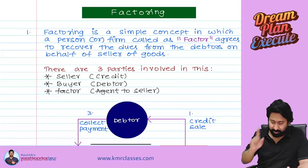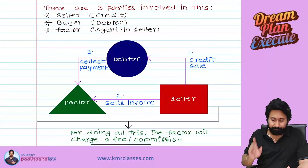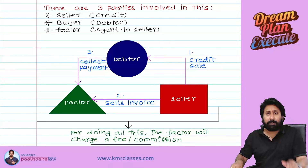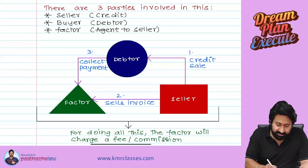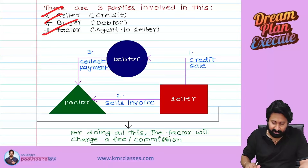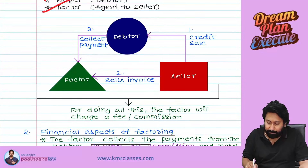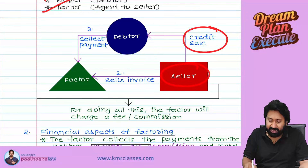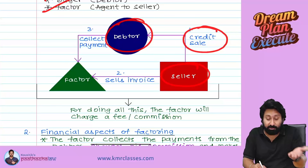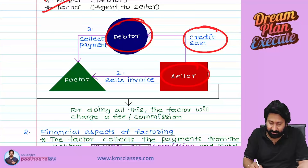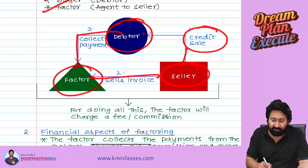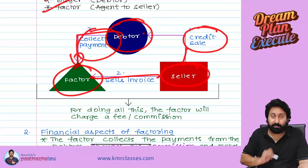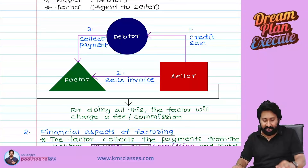There are three parties involved in factoring: seller, buyer, and factor. The seller makes a credit sale to the debtor, which creates receivables. These receivables are then sold to the factor, and the factor collects payment from the debtor.